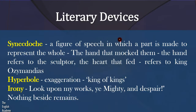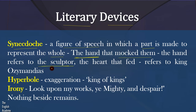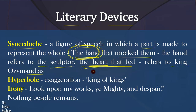Now let us see the literary devices used in this poem. The first device is Synecdoche — a figure of speech in which a part is made to represent the whole. When the poet says 'the hand that mocked them,' he is referring to the sculptor, so the hand refers to the sculptor by naming one part of his body. When he says 'the heart that fed,' the heart refers to King Ozymandias. So this is Synecdoche.